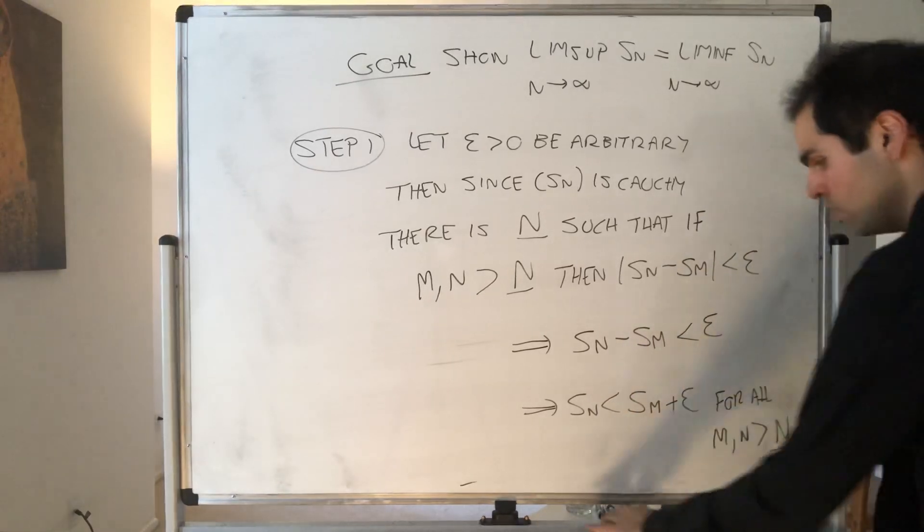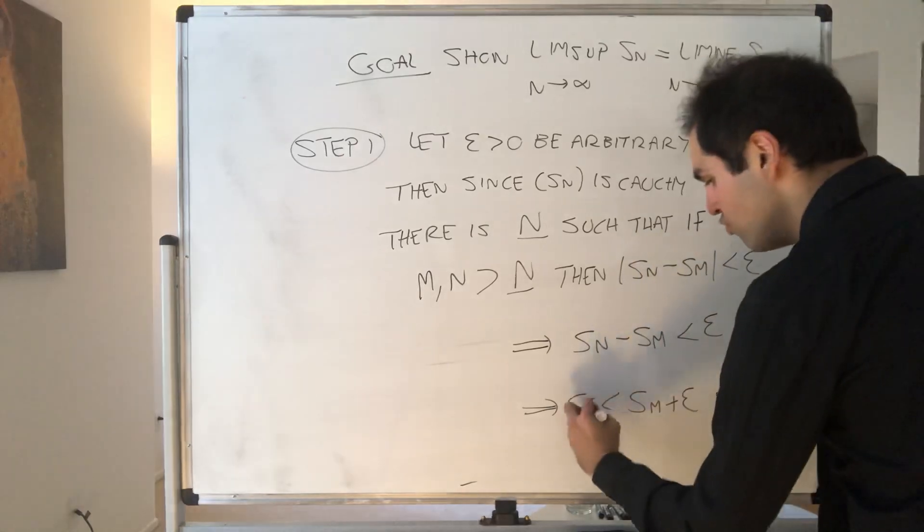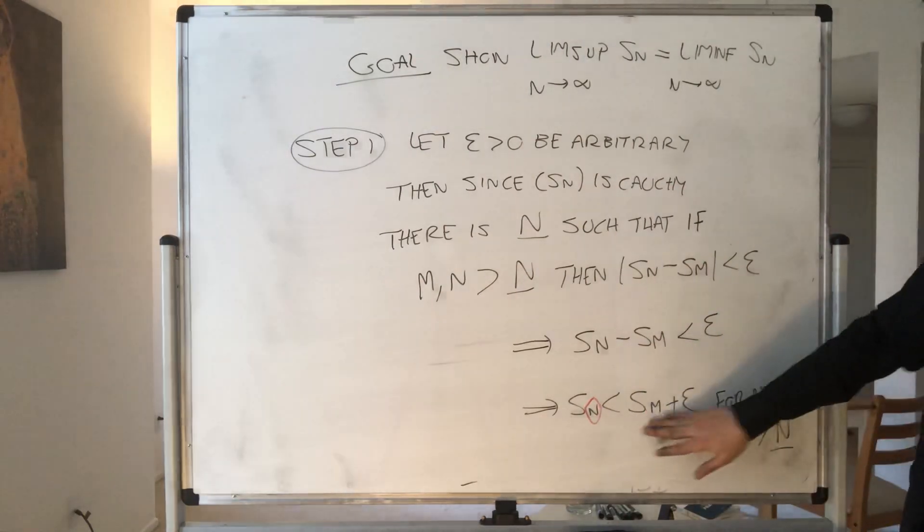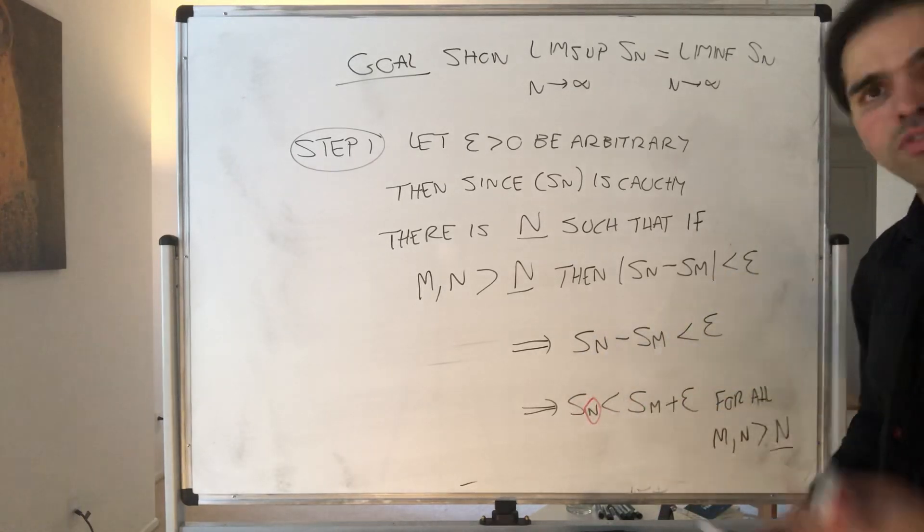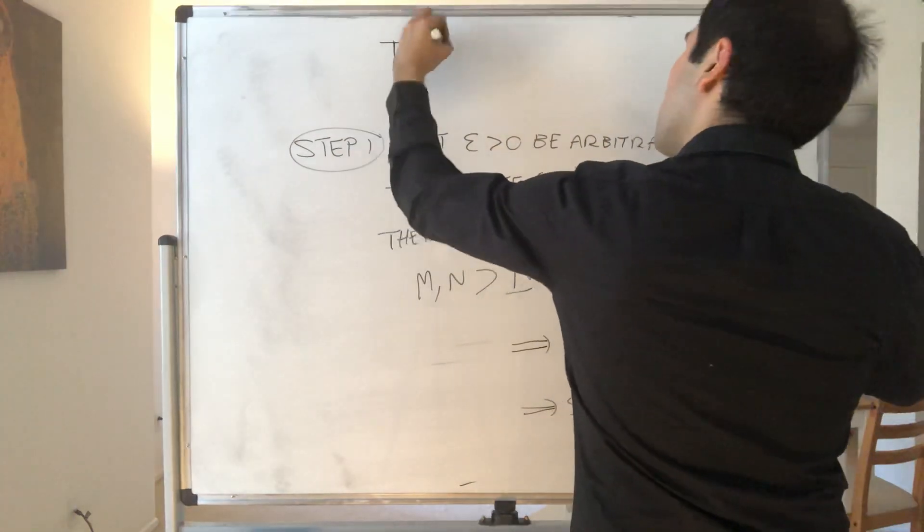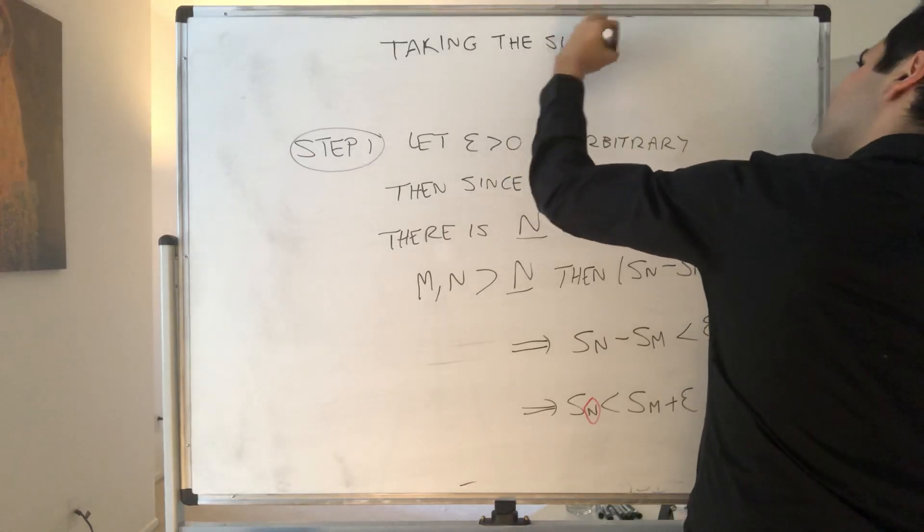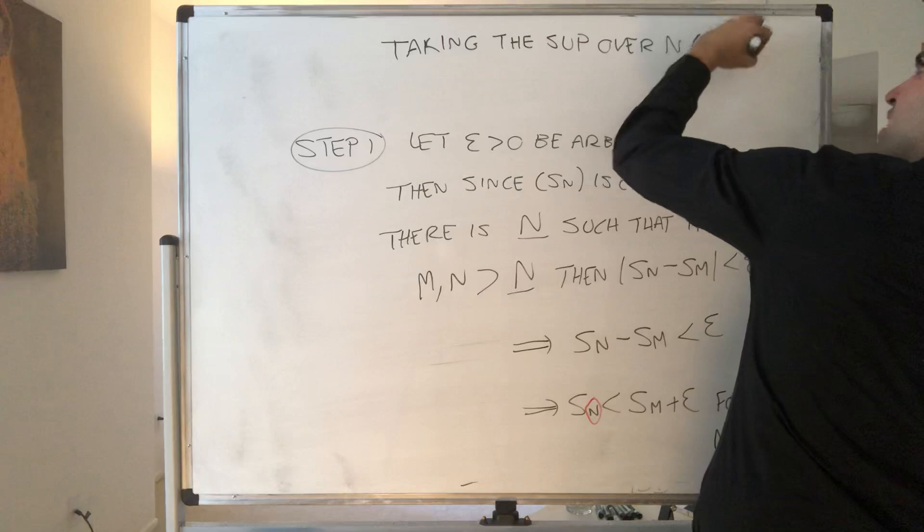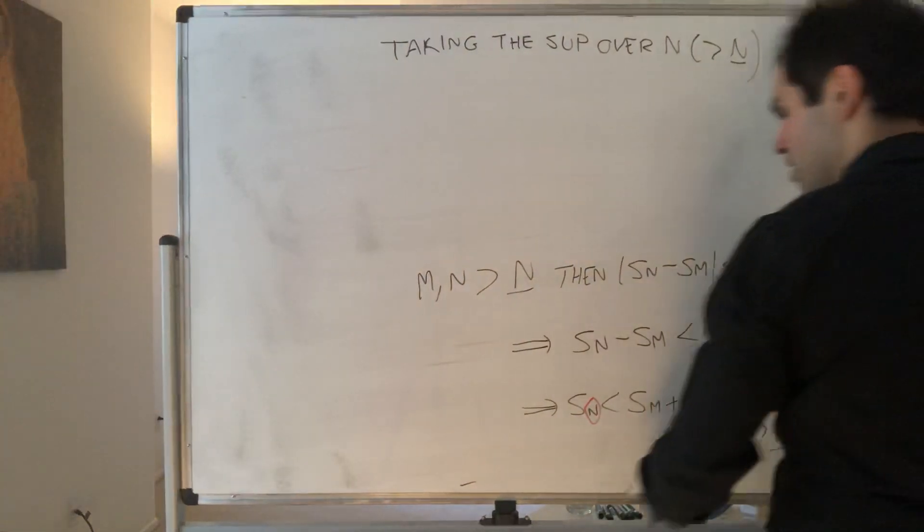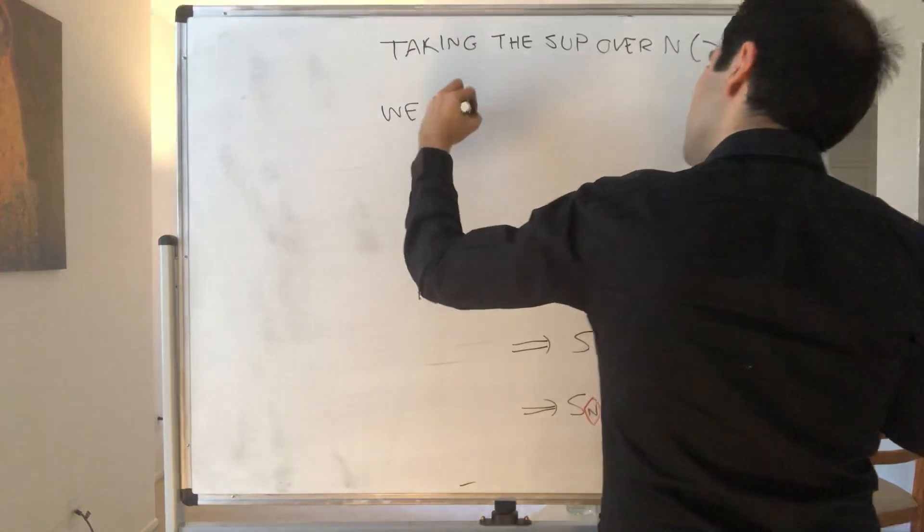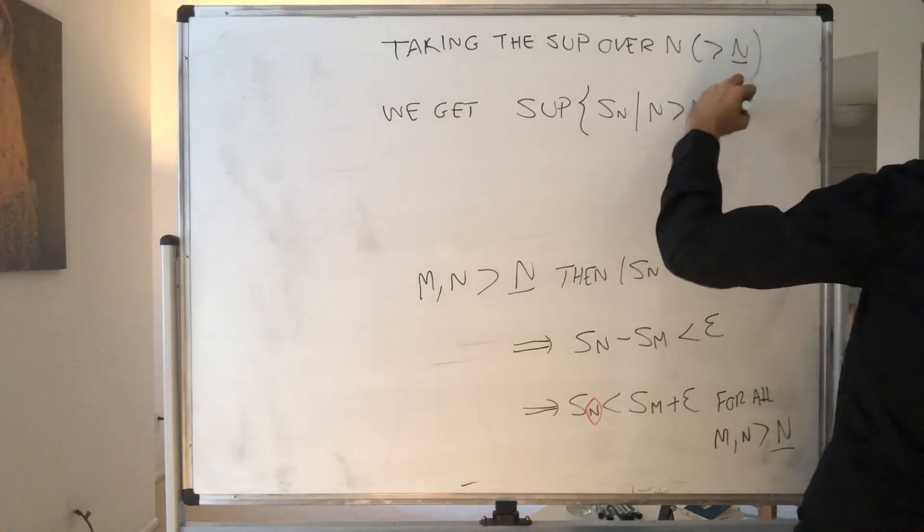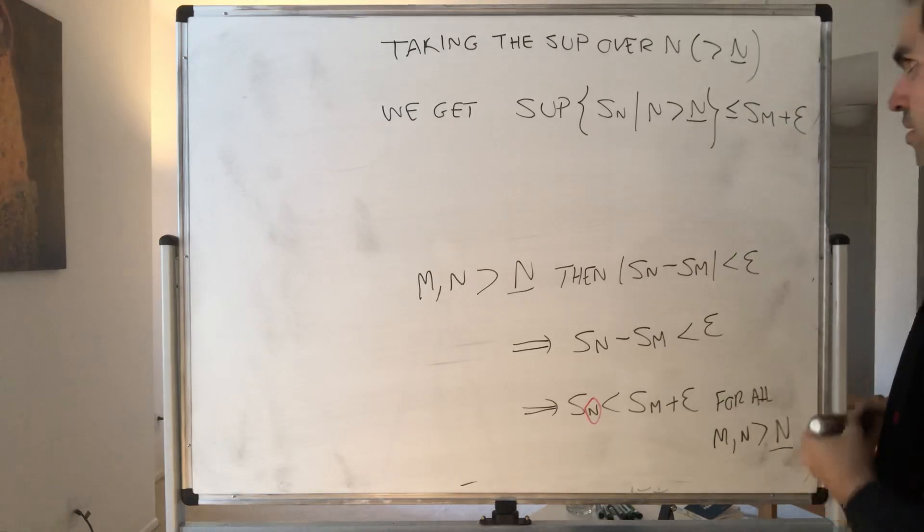Now, here's the thing. This is true. So fix M. This is true for all M. So in particular, this is true for the supremum of all Sn. If a number is smaller than a fixed number, then the maximum of all those numbers is also smaller than that fixed number. So now, taking the sup over N, where N is bigger than capital N, we get that the supremum of Sn, where N is bigger than capital N, is less than or equal to Sm plus ε.